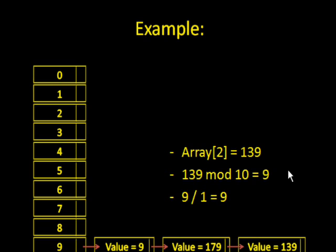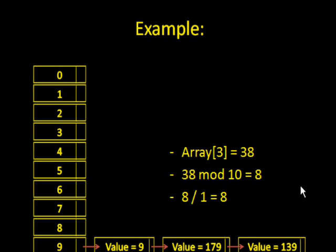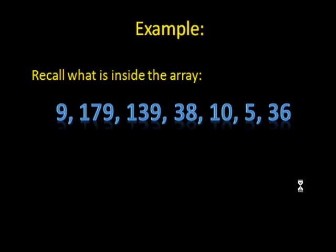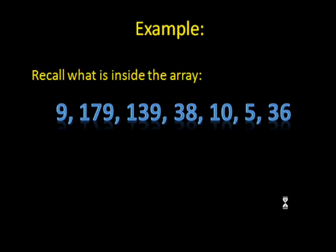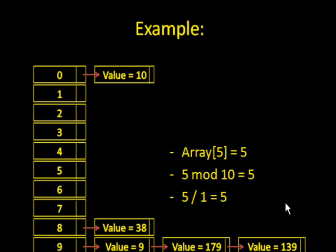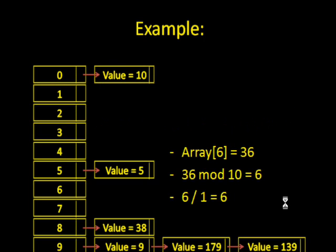Next we have 38. 38 mod 10 we would get 8, and 8 divided by 1 will be 8, so we put it in the 8's list. 10: 10 mod 10 will be 0, because the remainder would be 0, and 0 divided by 1 will be 0, so we have to put it in the 0's list. 5: 5 mod 10 will be 5, and 5 divided by 1 will be 5, so we have to put it in the 5's list. 36: 36 mod 10 will be 6, and 6 divided by 1 will be 6, so we put it in the 6 column.